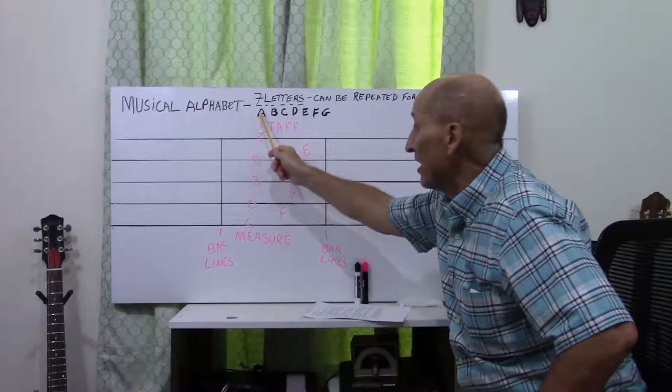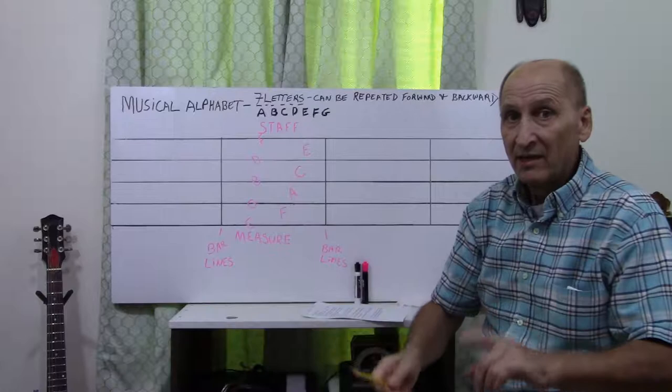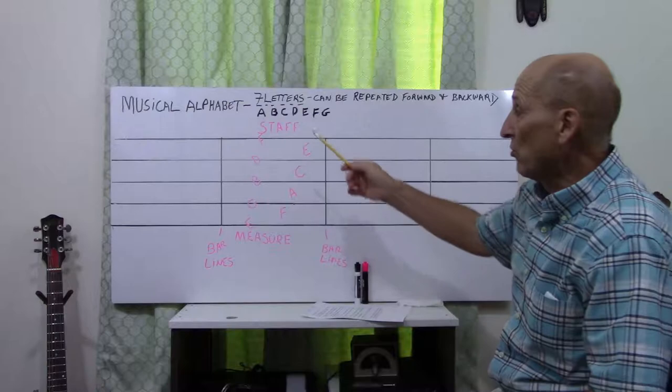It will also repeat going backwards where you have A, G, F, E, D, C, B, A, and so on. Very important. It'll go both ways. Now, what do we do with the alphabet?